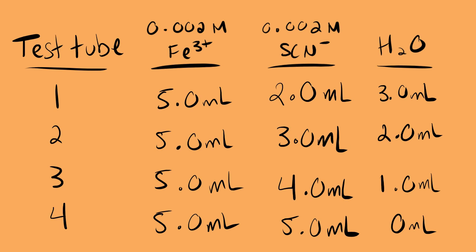In test tubes one through four we have the same initial concentration of the iron and the thiocyanate before mixing — a 0.002 molar solution of each. We're taking 5 milliliters of the Fe3+ and adding 5 milliliters to each of the test tubes. It is the thiocyanate that is going to differ in concentration once the reactants are mixed together, as we are taking 2 milliliters, 3 milliliters, 4 milliliters, and 5 milliliters in test tubes one through four respectively.